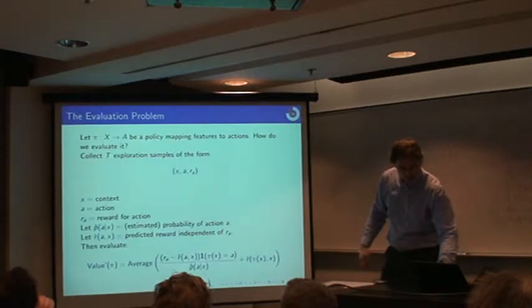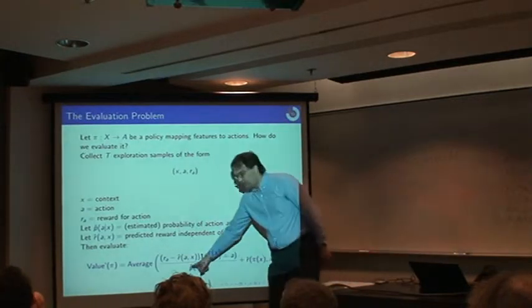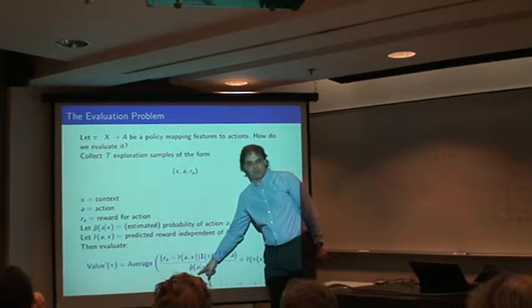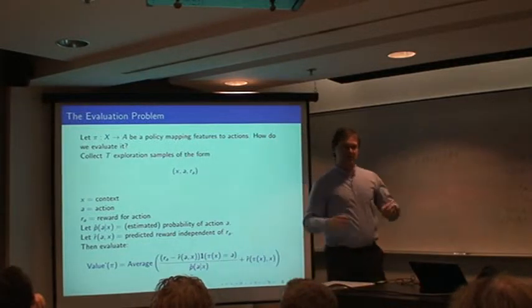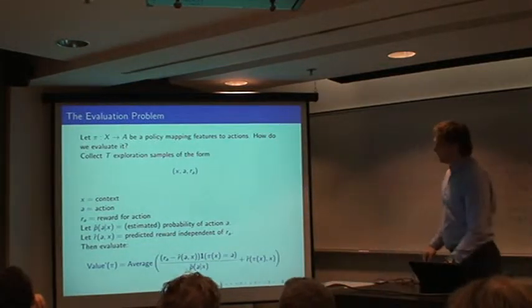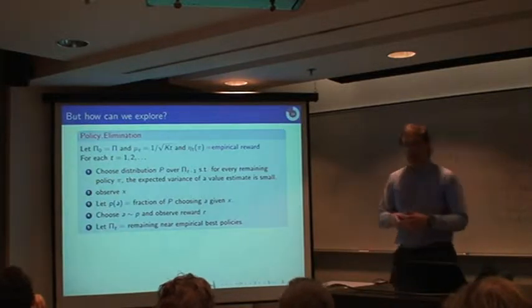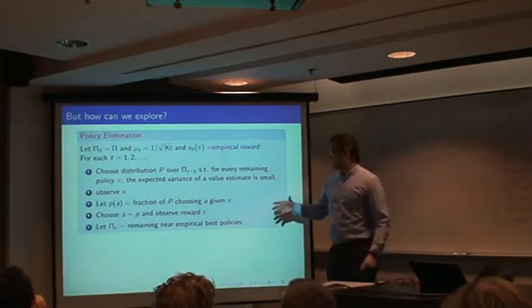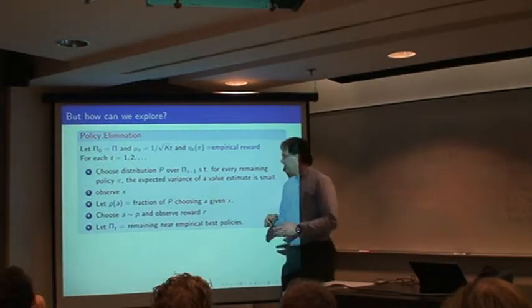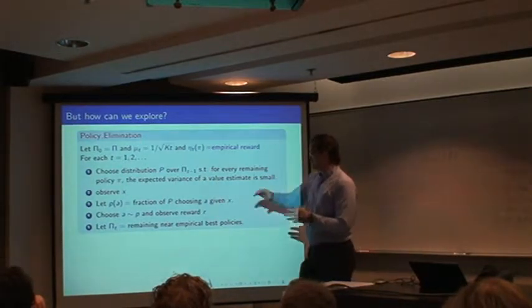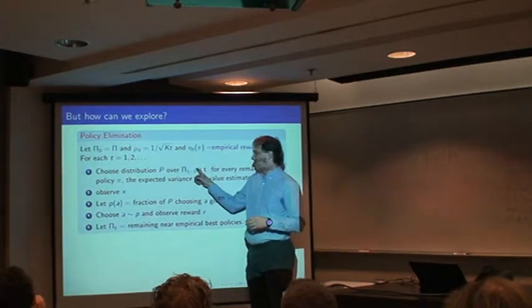So let's go back here. When p hat goes to zero, you have a problem. Your variance is going to blow up. That doesn't sound good. So the tricky thing in choosing your exploration distribution well is you need to make sure that your probability doesn't get too small. So you choose the distribution over your policies carefully.